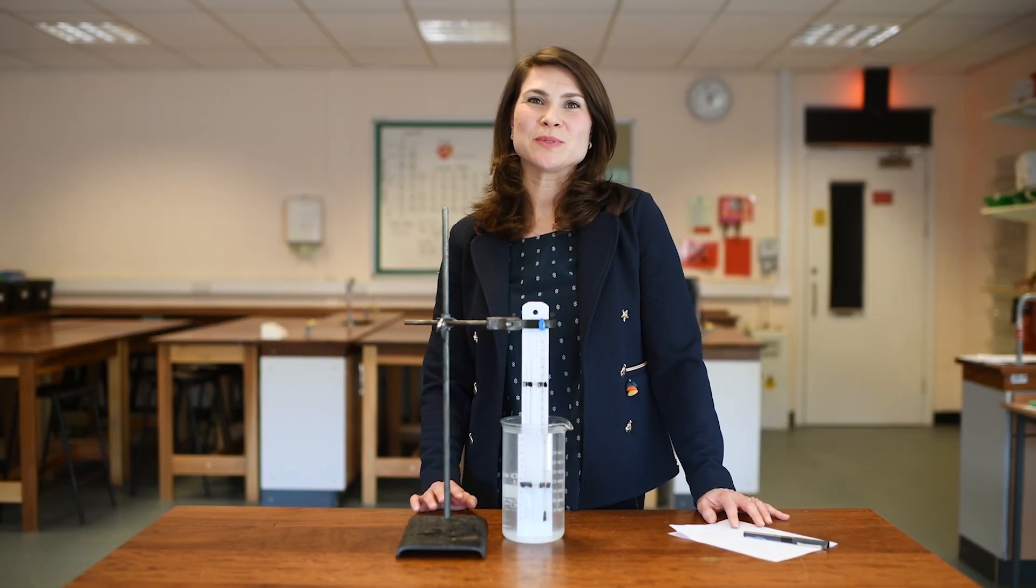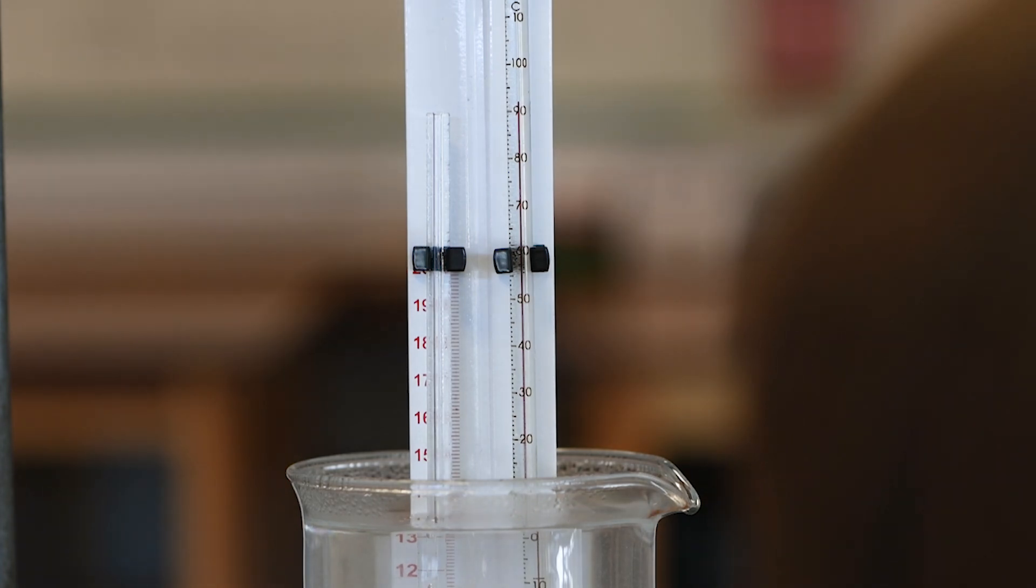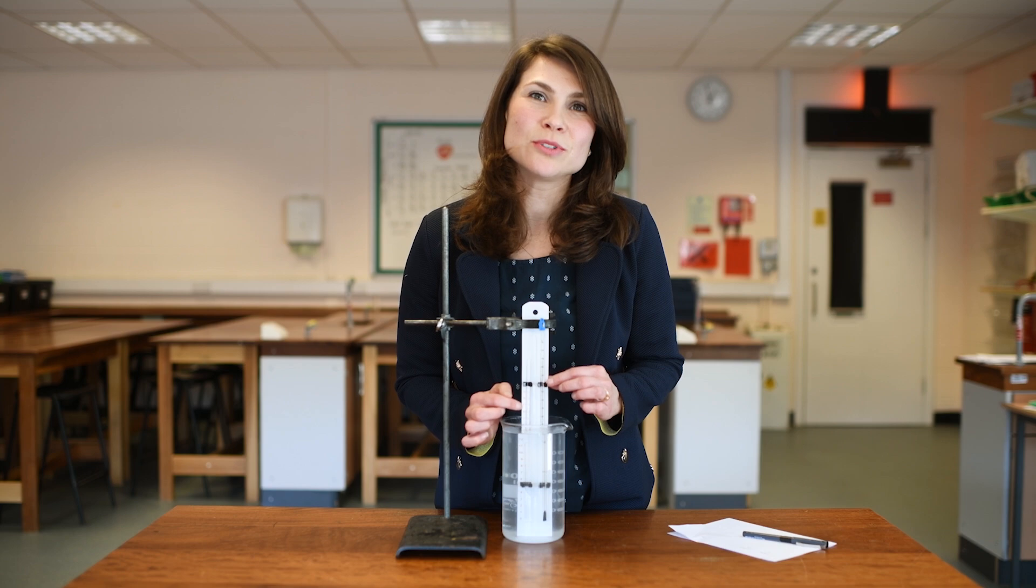It's important to take the measurements at eye level as this will reduce the parallax error in your measurements. And also, if you're setting up your equipment, you really want to make sure that the capillary tube is really close to the ruler and close to the scale on the ruler.